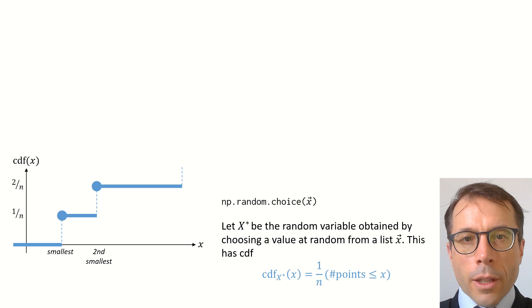Let's write that out formally. Let x star be the random variable obtained by choosing a value at random from the list. The CDF of this random variable is given by this formula here. Now, where have we seen this before? It's nothing other than the empirical cumulative distribution function for a data set.